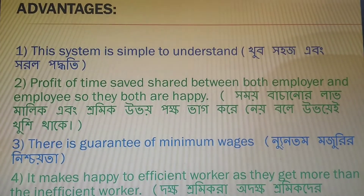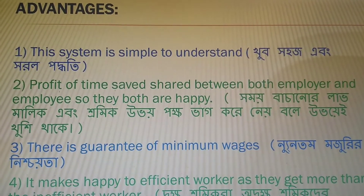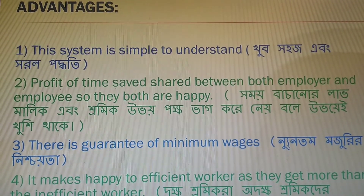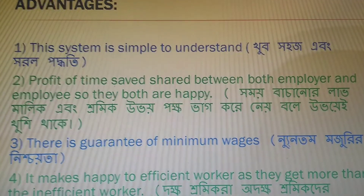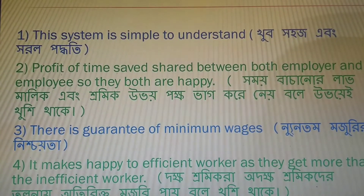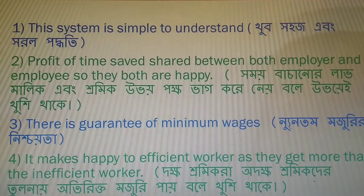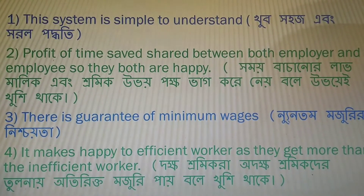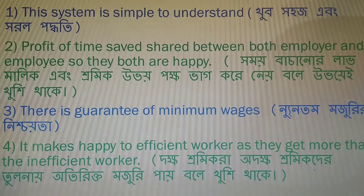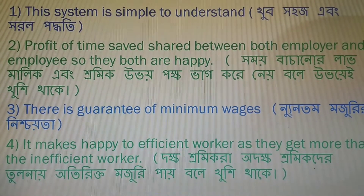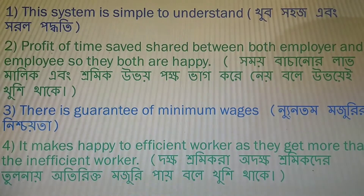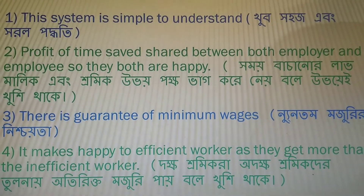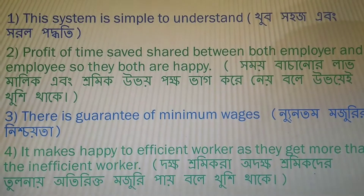Now let us look at the advantages of this system. Firstly, this system is very simple to understand and calculate. Secondly, when a worker saves time, 50% of that time saved goes to the worker as bonus and 50% is taken by the proprietor — so the profit of time saved is shared between both employer and employee, and both are happy with this arrangement.